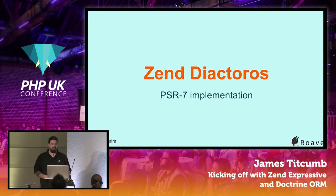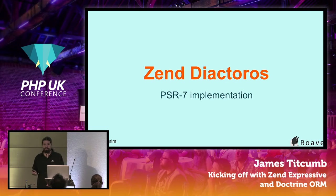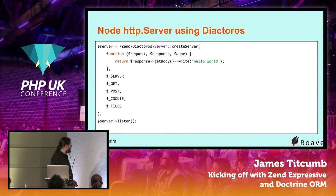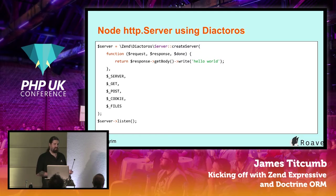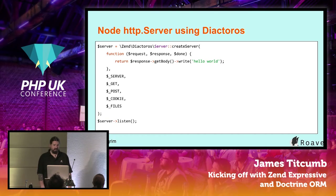Diactoros also has a URI implementation. There's a PSR in progress to do that separately, but for now Diactoros has one which is useful. You also have the basic ability to dispatch a request to a callable, similar to what you might have seen with Node HTTP server. But the execution model of PHP is fundamentally different — it's shared-nothing on a server API, whereas Node.js builds an actual server that listens.